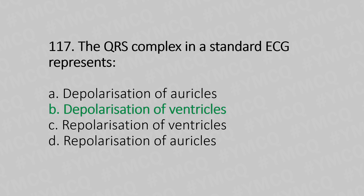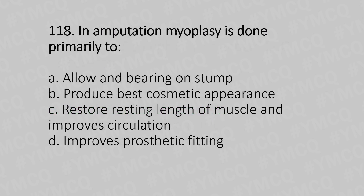Question number 118: In amputation, myoplasty is done primarily to — Option A: allow end-bearing on the stump, Option B: produce the best cosmetic appearance, Option C: restore resting length of the muscle and improve circulation, Option D: improve prosthetic fitting. The answer is Option A, allow end-bearing on the stump.